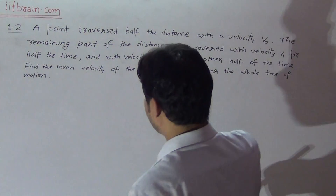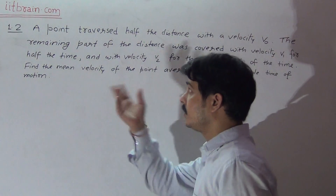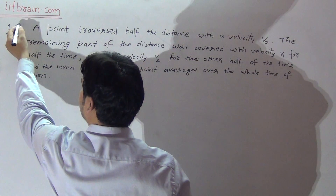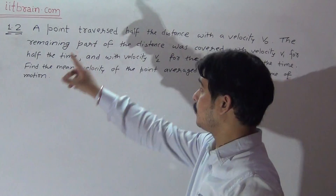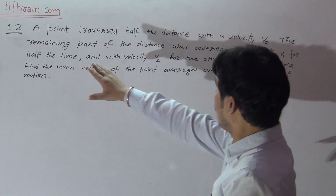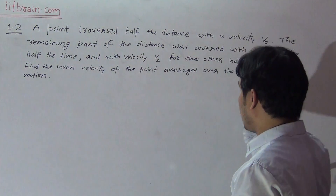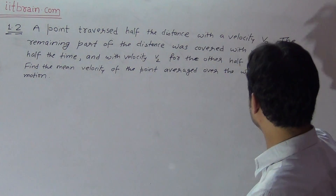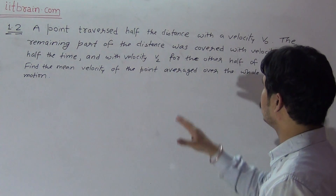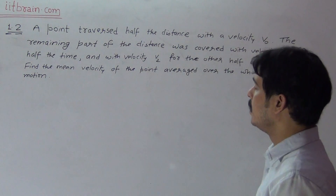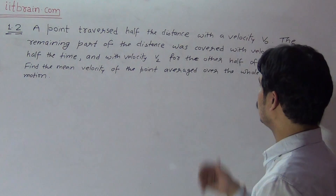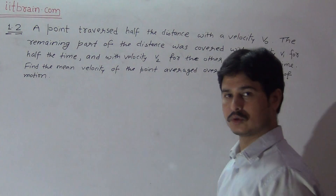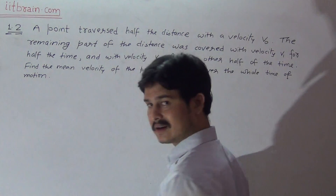Hello students, this is problem 1.2 of IE Irodov — the first chapter, problem number 2. A point traversed half the distance with a velocity V0. The remaining part of the distance was covered with velocity V1 for half the time and with velocity V2 for the other half of the time. Find the mean velocity of the point averaged over the whole time of motion. The particle is moving in a straight line.